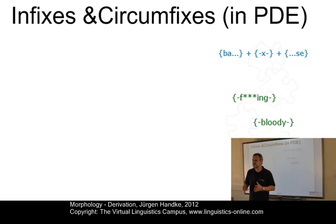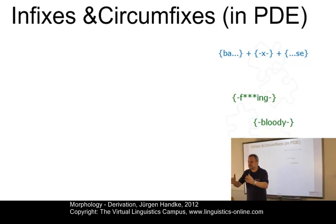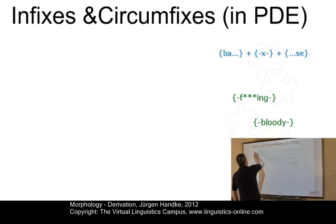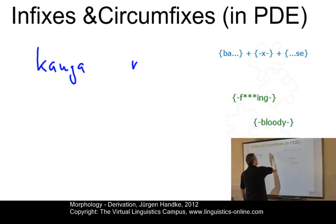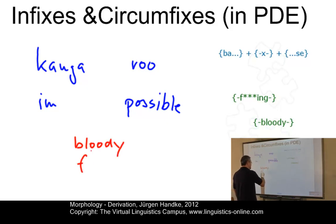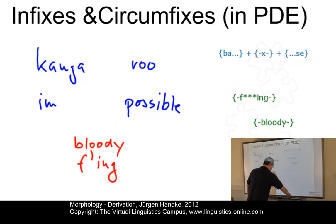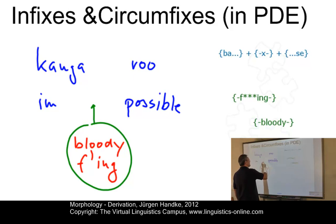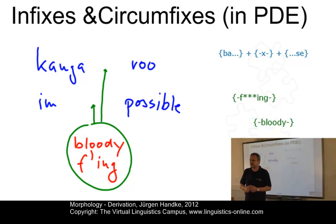Here is the third group: infixes and circumfixes in present-day English. There is general agreement among morphologists that English has neither infixes nor circumfixes. However, in examples of expressive language — so-called expletives, that is, words with a clearly recognizable negative attitude — these may be inserted as infixes. Let's take two base forms, for example 'kangaroo' or 'impossible.' If I take one of these expletive words like 'bloody' or the famous effing word, I could in expressive language insert them into these gaps, producing something like 'kangar-bloody-roo' or 'in-fucking-possible.'